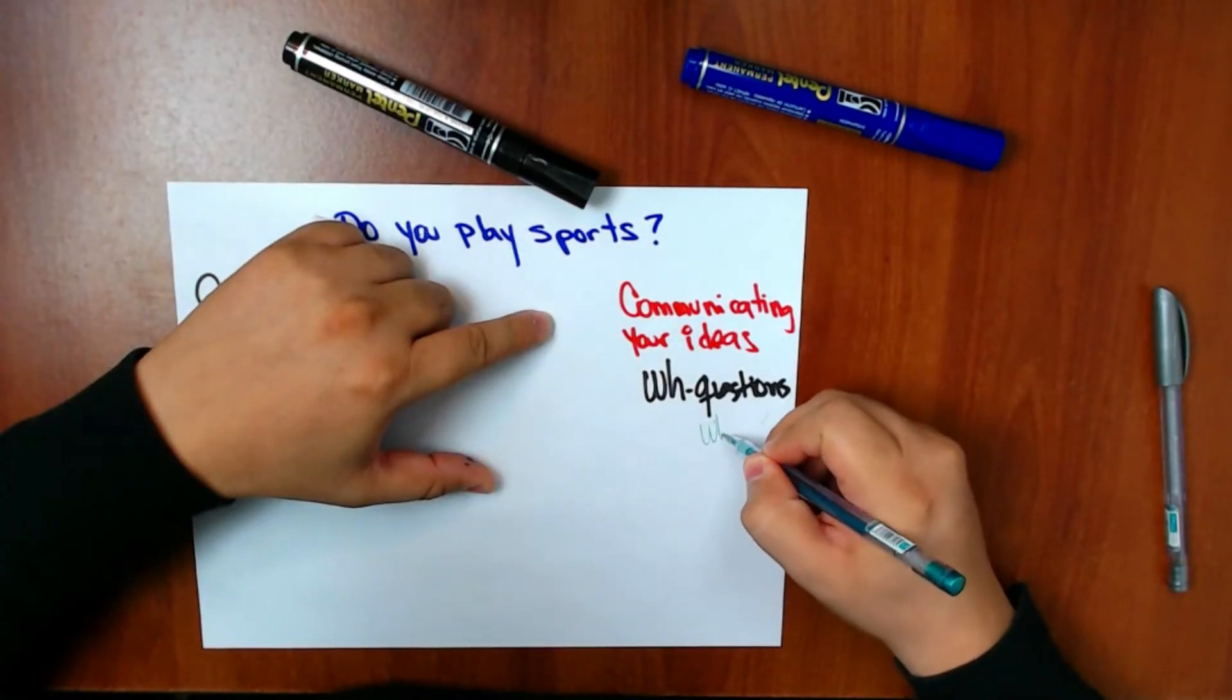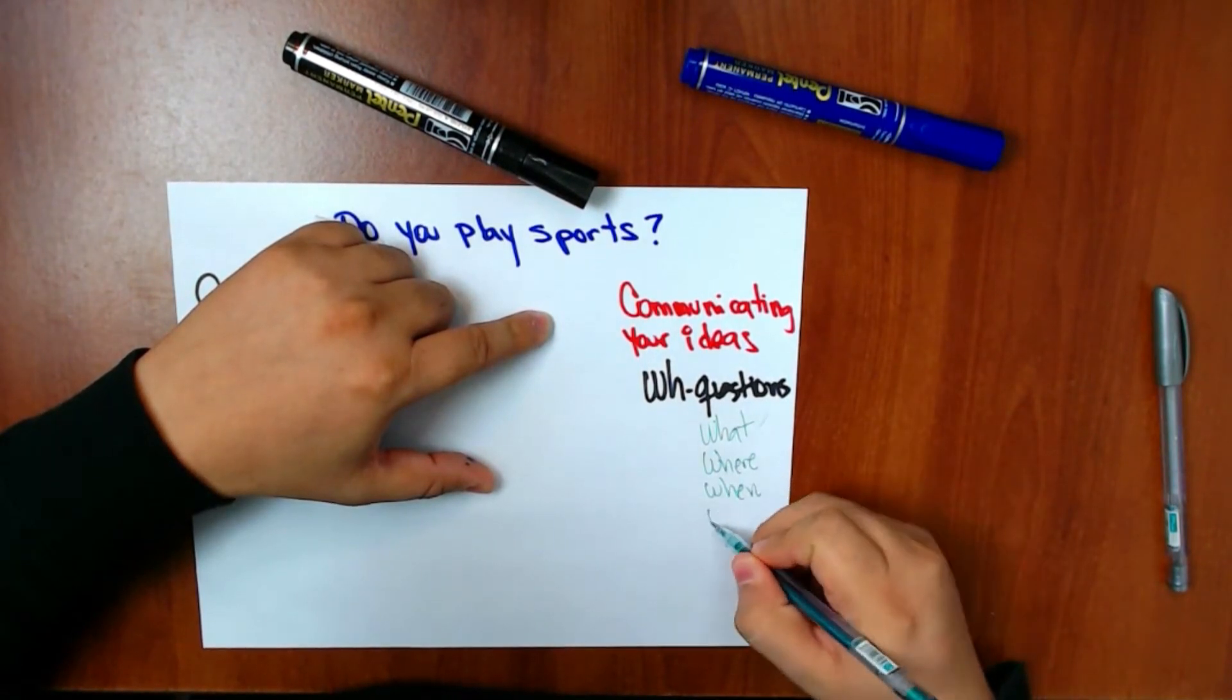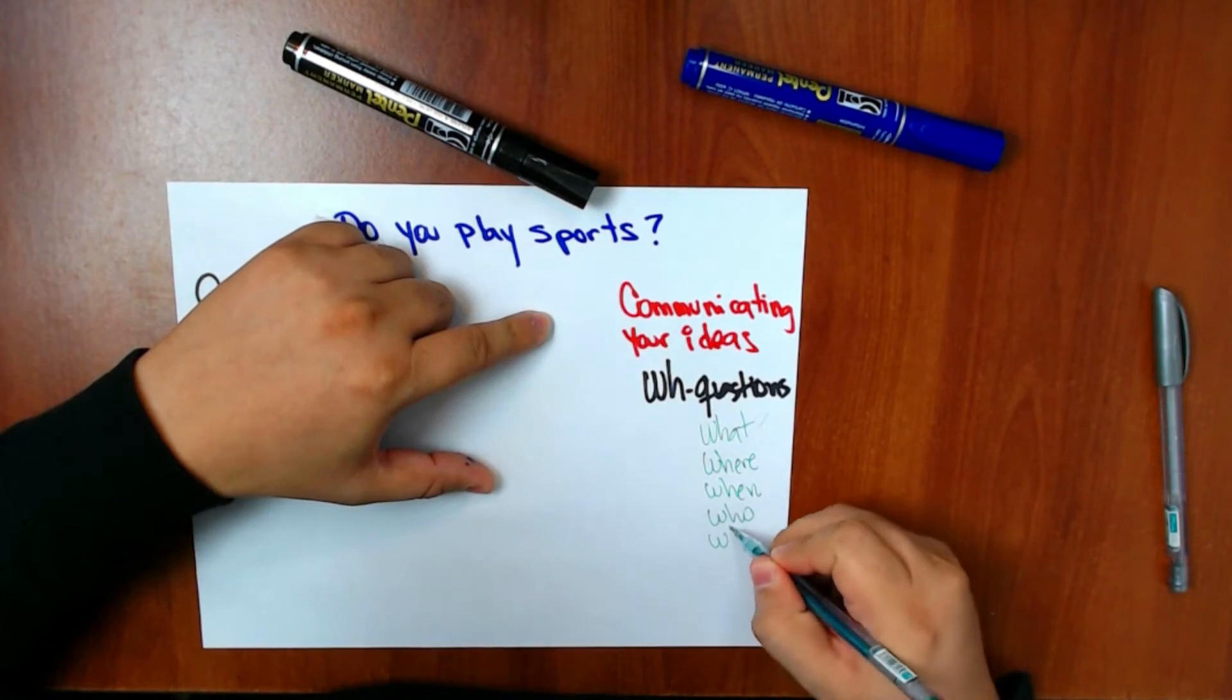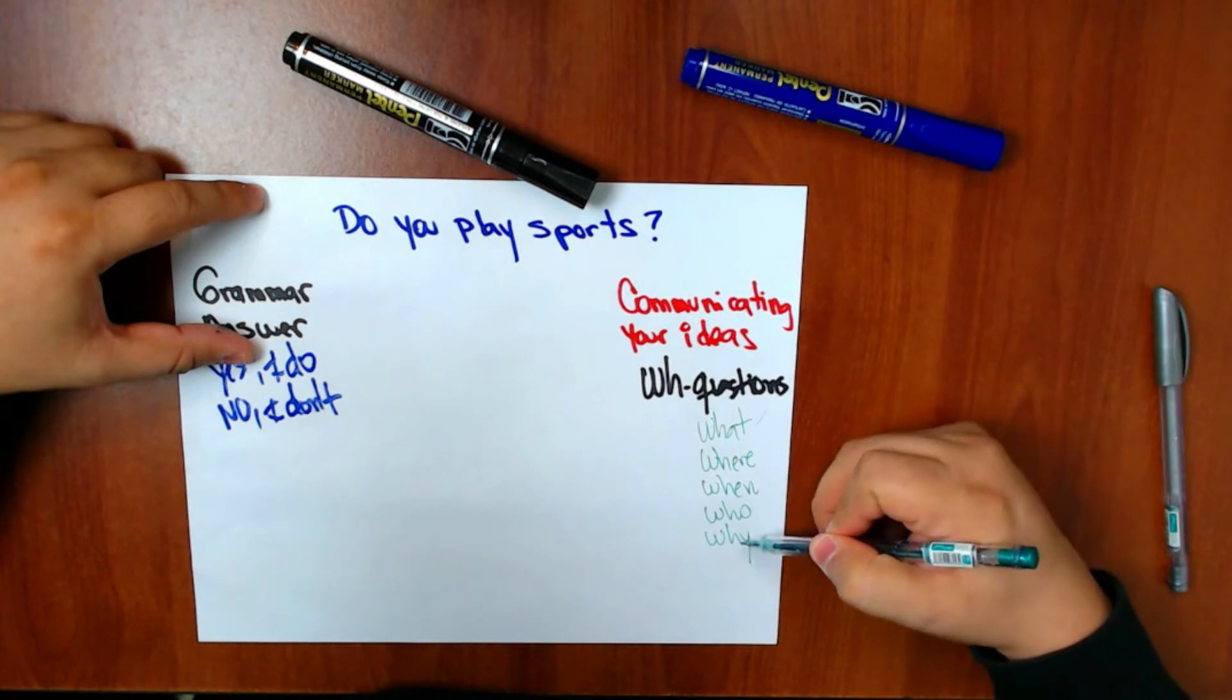So we have what, where, when, who, why. As you can see, there are five WH questions.